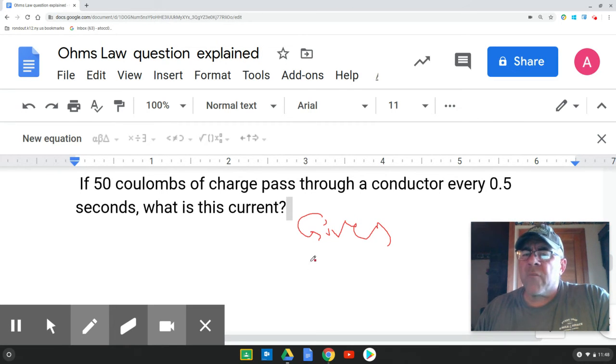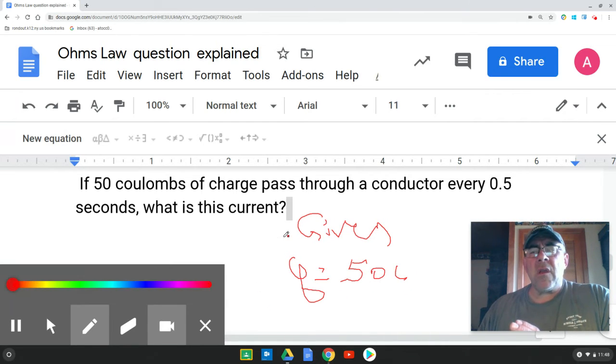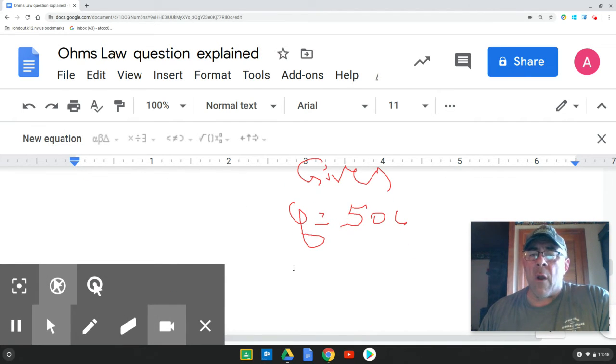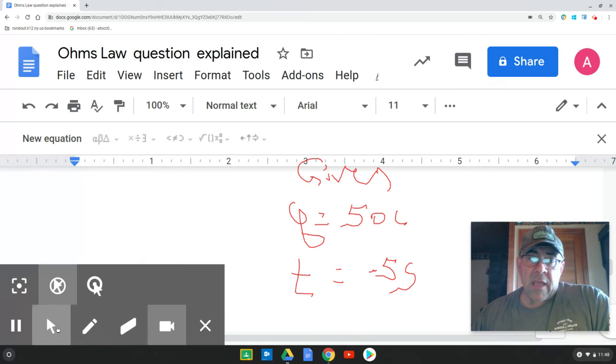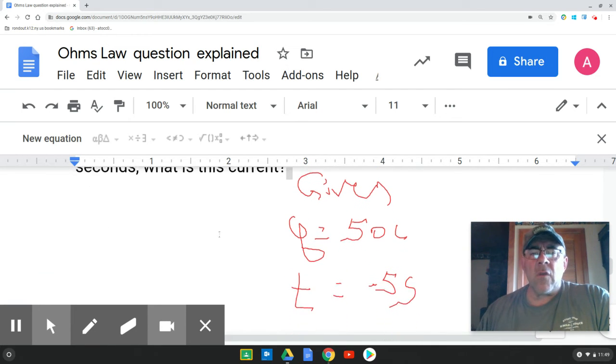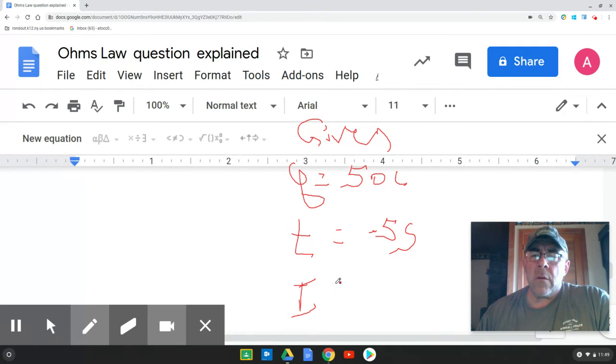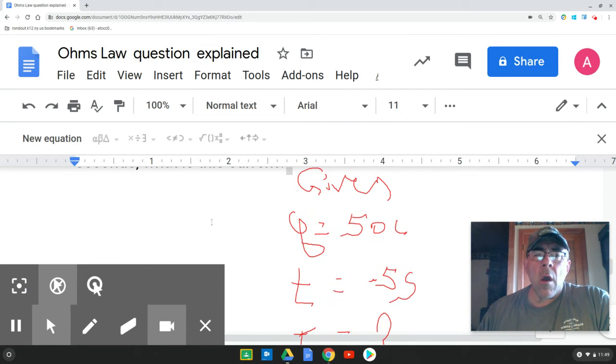What do I know? If 50 coulombs, well, what are coulombs units for? Q. Charge 50 coulombs. And it passes through a conductor every 0.5 seconds. Well, what are seconds units for? Seconds are units for time. So T equals 0.5 seconds. Did I get that right? Let's double check. 0.5 seconds. And what are they asking me for? They're asking me to solve for current. Current equals I don't know.